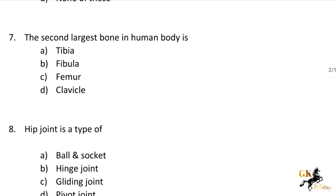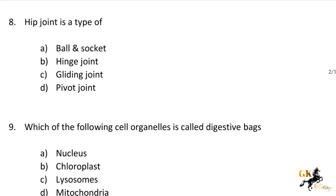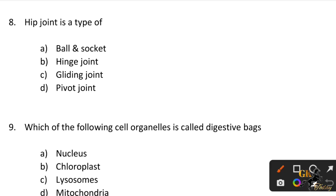Next question: The second largest bone in the human body is — Options: Tibia, Fibula, Femur, Clavicle. The second largest bone in the human body is Option A: Tibia. Hip joint is a type of — Options: Ball and socket, Hinge joint, Gliding joint, Pivot joint. Hip joint is a type of Ball and socket.